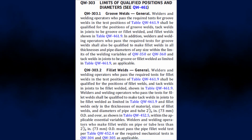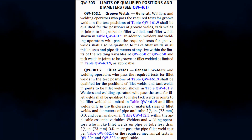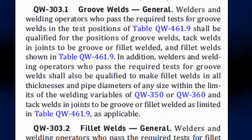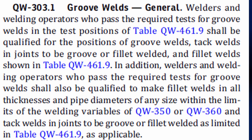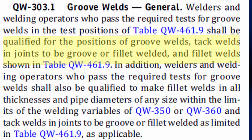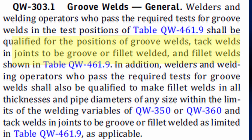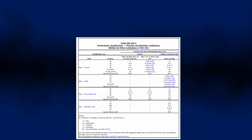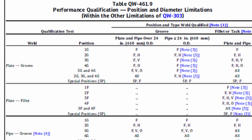For the weld position, QW-303 specifies the extent and limitations of qualifying a welder in terms of position during qualification. QW-303.1 states that if the welder qualifies with the test positions of groove welds, then the welder will be qualified for positions of groove and fillet welds, including tack welds. QW-303.2 states that if you qualify with the positions for fillet welds, then you are only qualified for fillet and tack welds for that welding position.